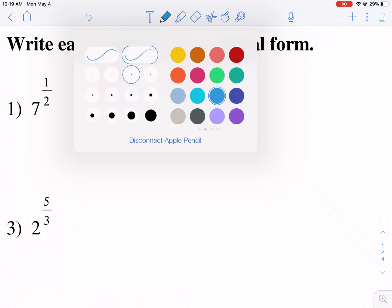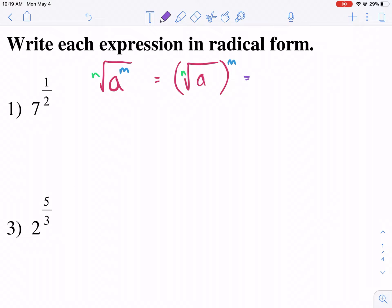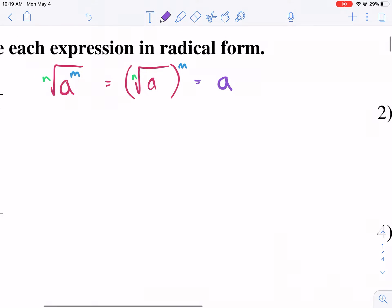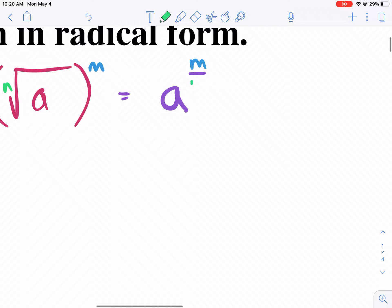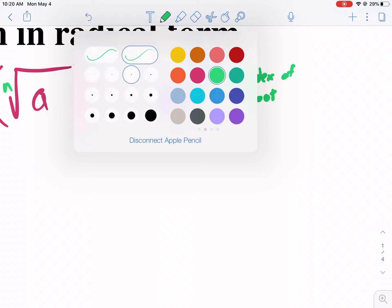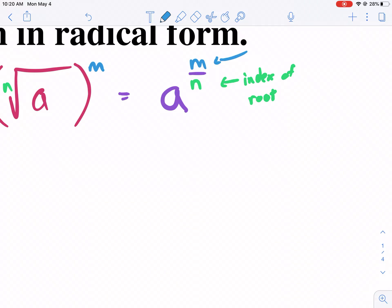So once we understand that, then we can understand that to put in exponent form, we already know that we can raise a to the m power. But now we have a different component, which is if we want to express a radical with exponent, we put it in the denominator. So this is the index of a root, and then the m is the power. So those are two different functions going on with one rational exponent.